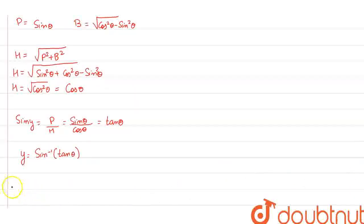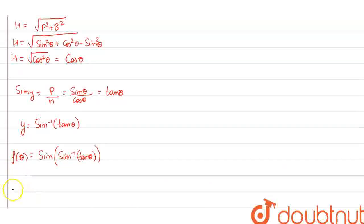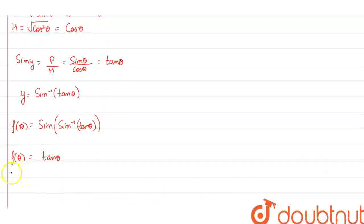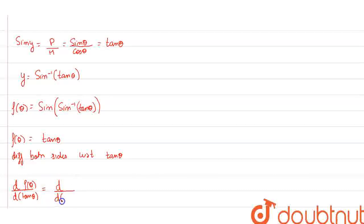Substituting this value of y in f(θ), we get f(θ) = sin(sin⁻¹(tanθ)) = tanθ. So the value of f(θ) is tanθ. Now, differentiating both sides with respect to tan θ, we get d/d(tanθ) of f(θ) = d/d(tanθ) of tanθ, which equals 1. So this is our final answer. I hope you all understand. Thank you.